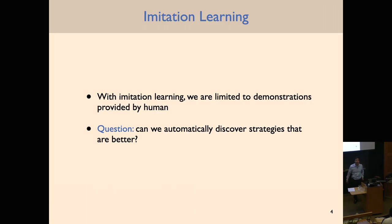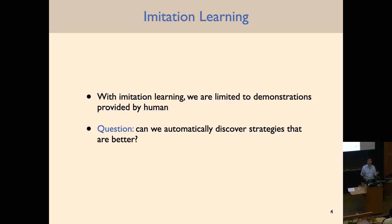One challenge with imitation learning is that we're inherently limited in terms of what we can achieve by the demonstrations provided by the human. We're ultimately just trying to mimic what the human is doing — not really going beyond what the human has shown us. So a natural follow-on question is: can we automatically discover strategies that are potentially better than just mimicking the human?